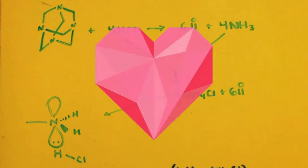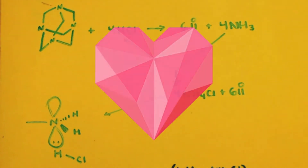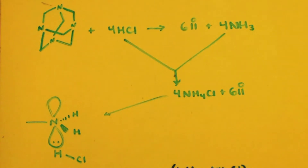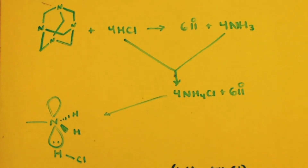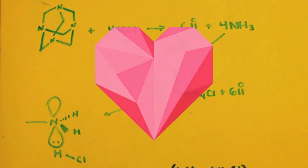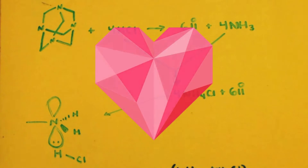You can see from the equation up here, if you take hexamine and you hydrolyze it with some HCl, it's going to break down into 6 moles of formaldehyde and 4 moles of ammonia. Now if you have 4 moles of HCl in that solution, the ammonia and the hydrochloric acid will react to make ammonium chloride — so you have 4 ammonium chlorides and 6 formaldehydes.